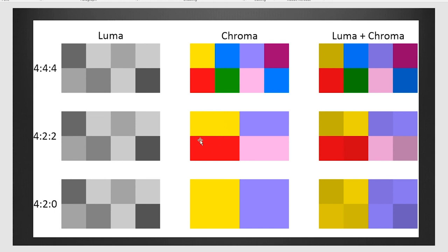Coming down to 4:2:2 — you've got a row of four pixels, but the next pixel is borrowing color information from the previous one. So basically on this top row, you're cutting your color depth in half. On the bottom row, the same thing happens — the fourth pixel borrows from the third, and that's where you get 4:2:2, because now you've got basically two bits of color information on both the top and bottom sample row.